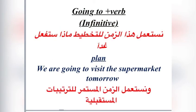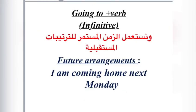Now, going to plus verb infinitive. We use this tense for plans — what we are going to do. For example: 'We are going to visit the supermarket tomorrow.' We also use it for future arrangements. Example: 'I'm coming home next Monday.' This is an arrangement.